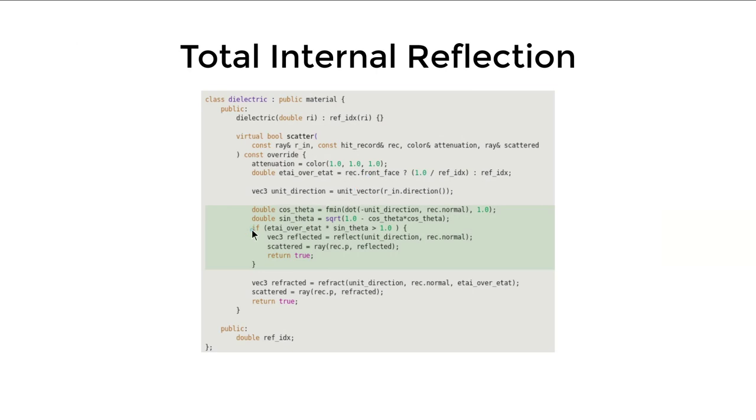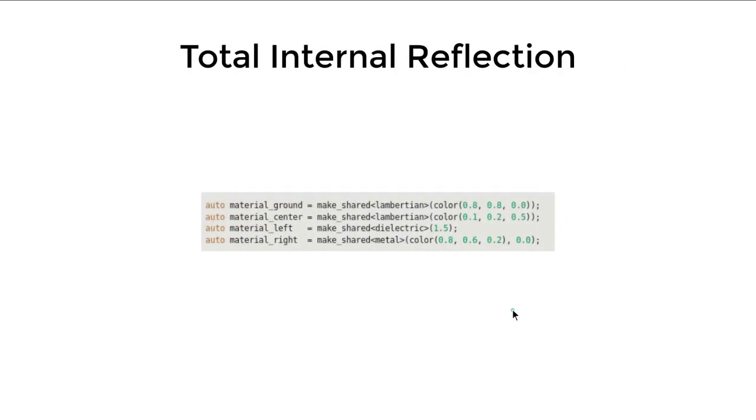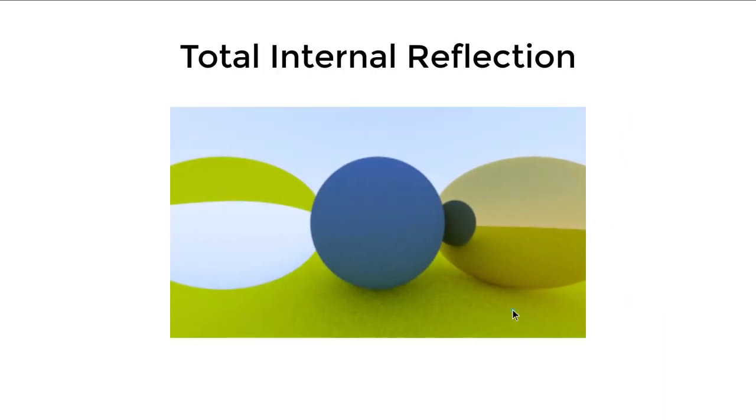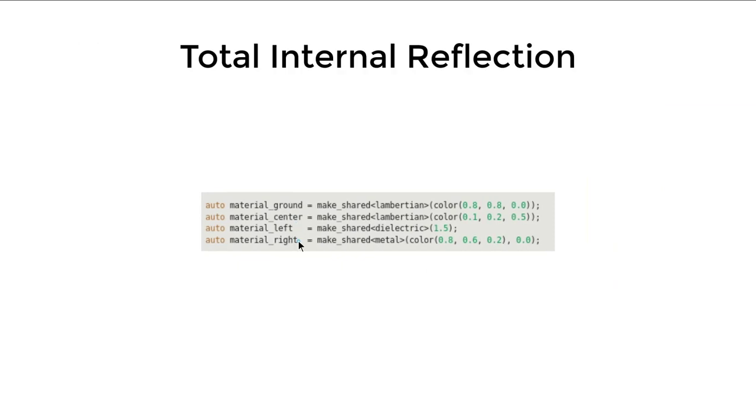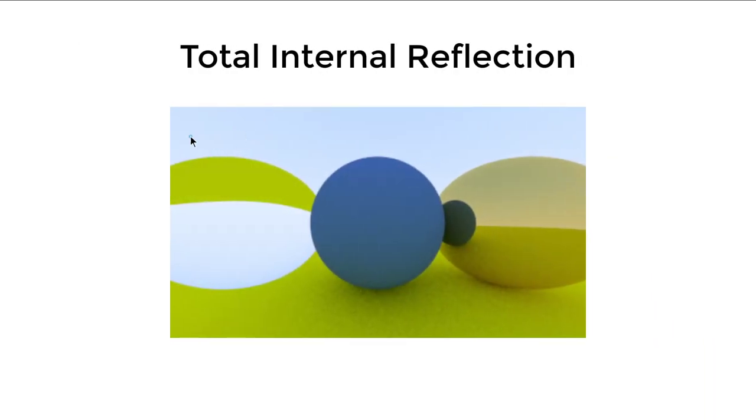So we need some sanity check to make sure if we are in the total internal reflection condition, we will just reflect. Otherwise, we refract. And with all of that set up, we also changed one of the material back into metal. With all of that set up, we have the correct look sphere here.